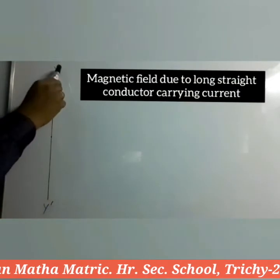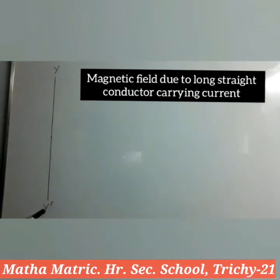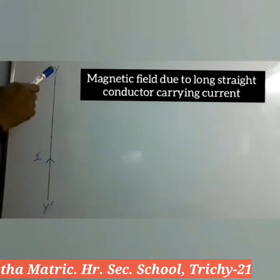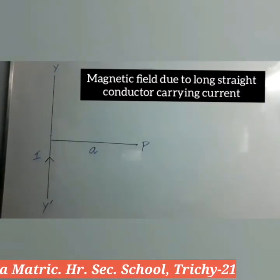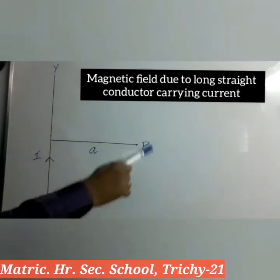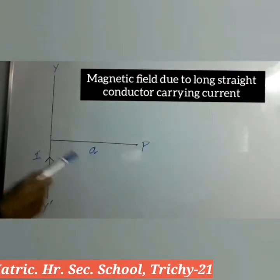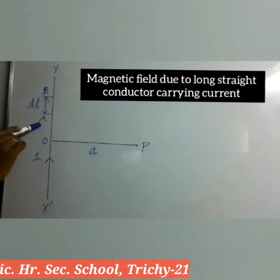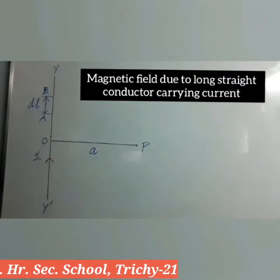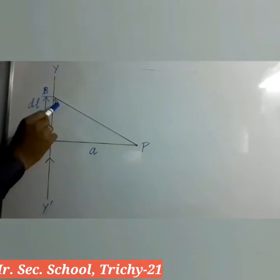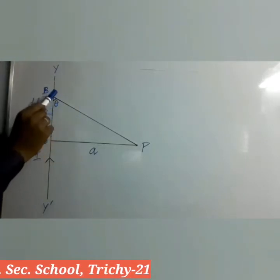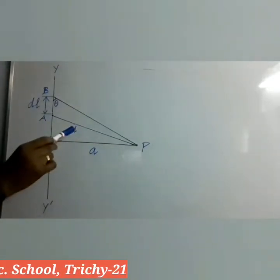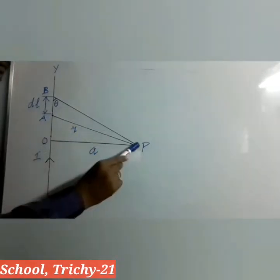Let YY' be an infinitely long straight conductor and I be the steady current through the conductor as shown here. In order to calculate the magnetic field at point P at a distance A from the wire, let us consider a small line element DL, that is segment AB. Let θ be the angle between the current element IDL and the line joining DL to point P, and R be the distance between the element at A and point P.